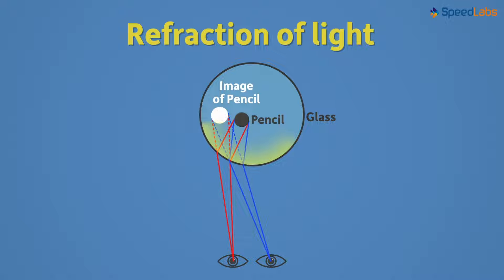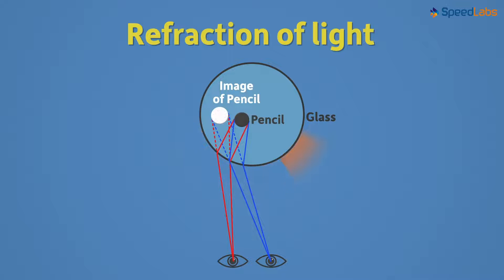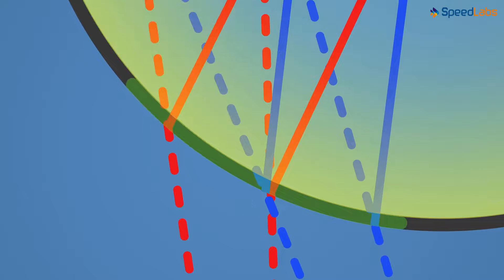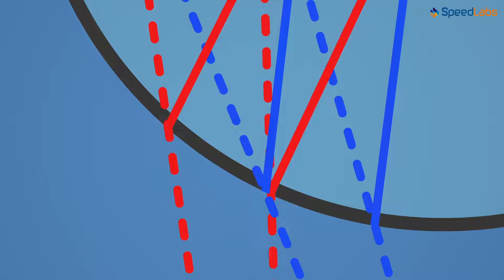First at the boundary of water and glass, and second at the boundary of the glass and air. But the refraction from water to glass is minimal as the glass is not really thick. Hence, we will ignore this tiny refraction.